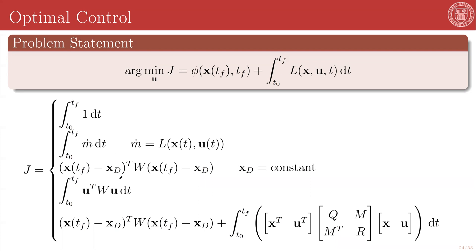Alternatively, you may care just about hitting the final values of your trajectory, in which case you could write a quadratic form of x at the final time minus some desired x, xd, which is constant, transpose times a weight matrix W times the same thing, x at tf minus xd. If this W matrix is the identity matrix, that means you care about each element of your state equally, or you can use it to tune how much you care about different elements of your state. For example, you may care a lot more about hitting a precise position than a precise velocity, or vice versa.